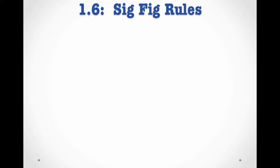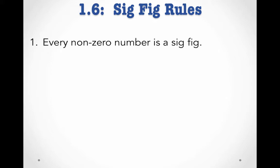There's a set of rules that will help us count significant figures. These rules are posted on the course website, so you don't have to write them down as you listen to the video, though you're welcome to if you prefer. You should bookmark or print out the list of rules from the course website, as you'll be needing that for in-class and homework assignments. We'll start with the simplest, most straightforward rule. In a measurement, every non-zero number is a significant figure, meaning digits 1 through 9, when they're in a measurement, are always counted as sig figs. This measurement here, 123 centimeters, has 3 sig figs.